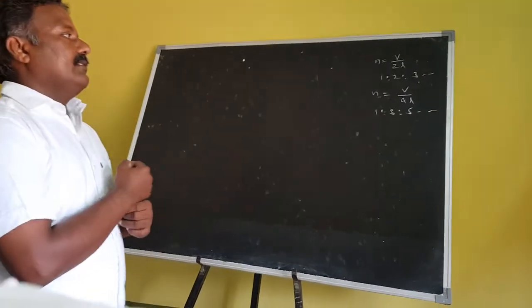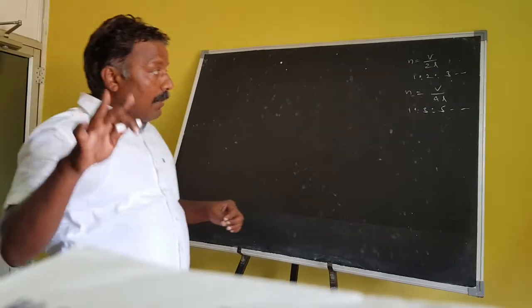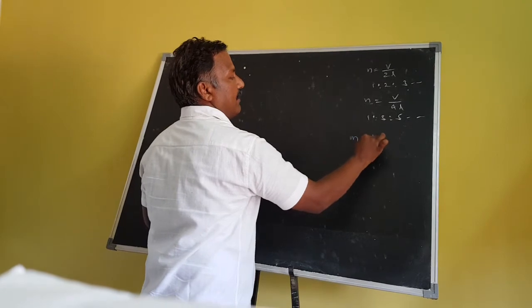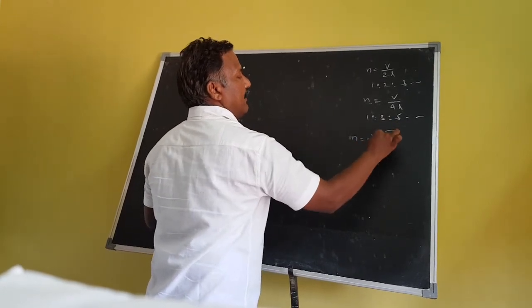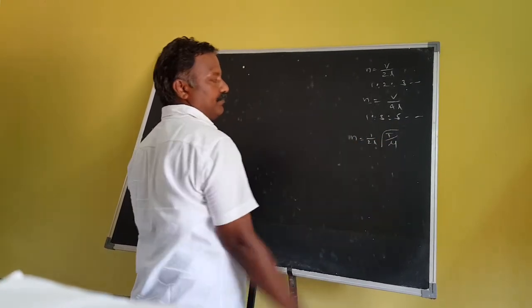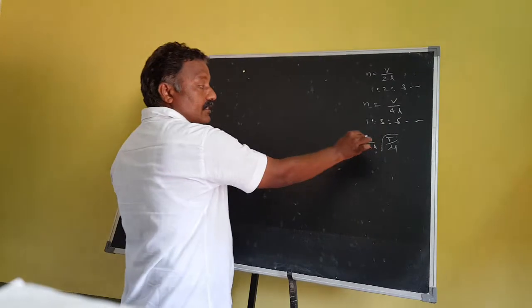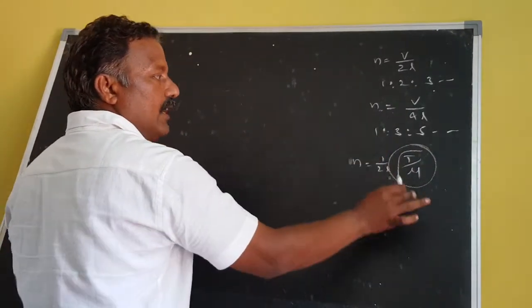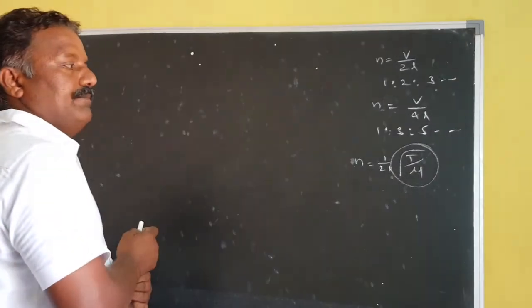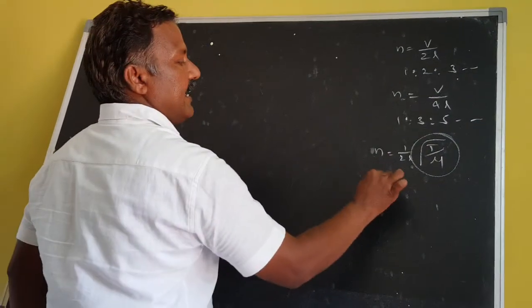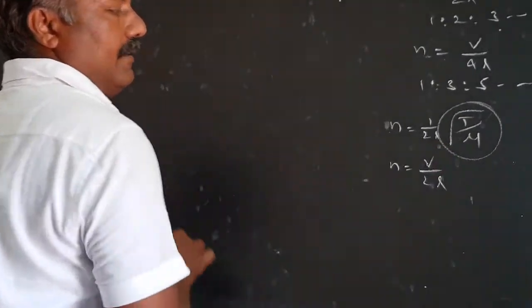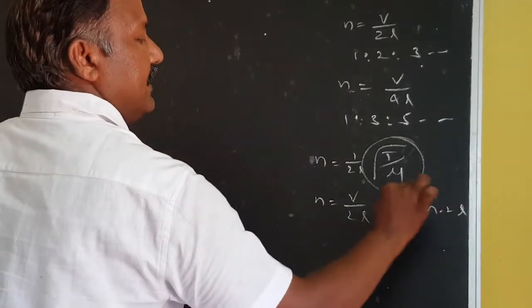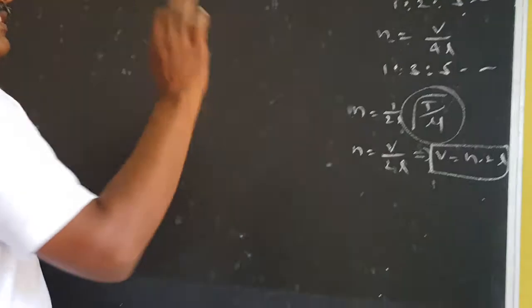And we discussed stationary waves formed in a stretched string. The stretched string fundamental frequency n is equal to 1 by 2L, under root of T by mu. Under root of T by mu represents the transverse wave velocity. So n is equal to V by 2L, which implies V is equal to n into 2L. This is the velocity formula for a stretched string.